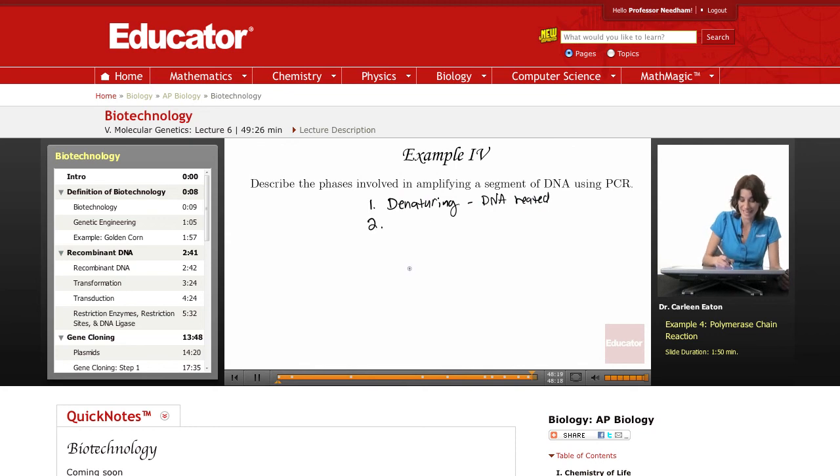The next phase is the annealing phase. During this phase, the DNA is cooled, and that allows the primer to hydrogen bond with complementary DNA. So denaturing is phase one, annealing is phase two.